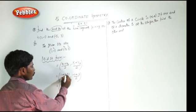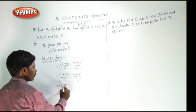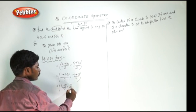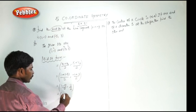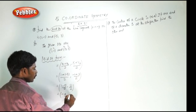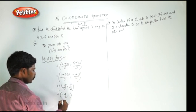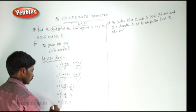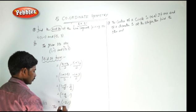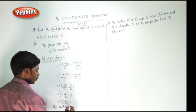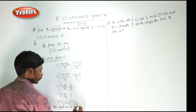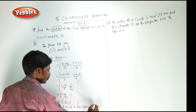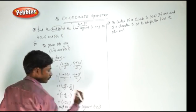1 plus (-5) by 2, comma -1 plus 3 is 2 by 2. This gives -4 by 2, comma 1, which reduces to (-2, 1). Therefore, the midpoint of the line segment is (-2, 1).